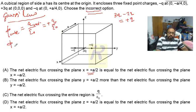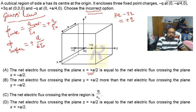Due to symmetry, the flux through each surface of the cube is q divided by 6ε₀. So the flux through the whole cube is q/ε₀, and the flux through each individual surface is q/6ε₀. Be careful not to confuse these two values.